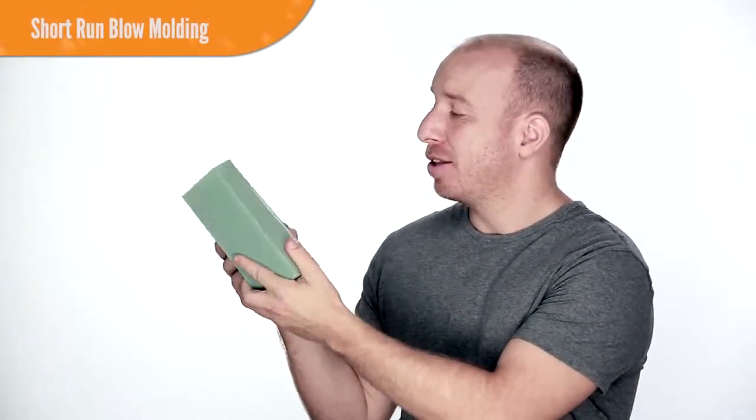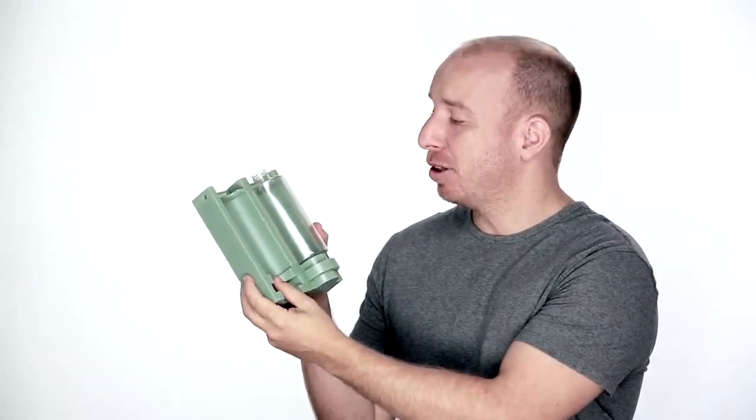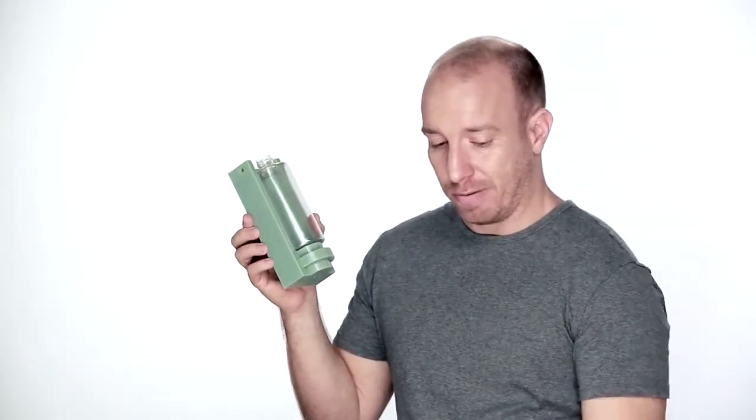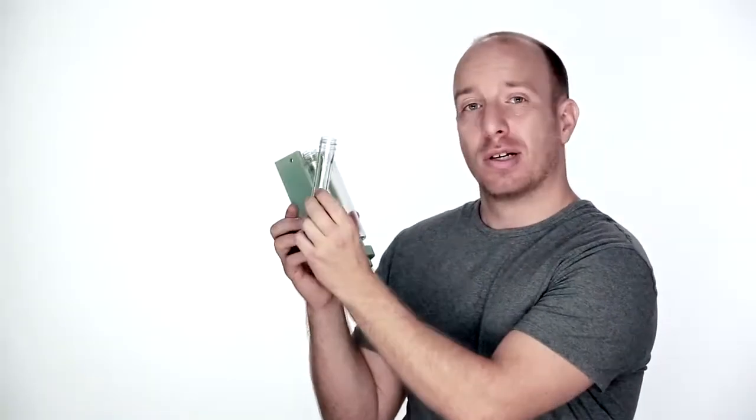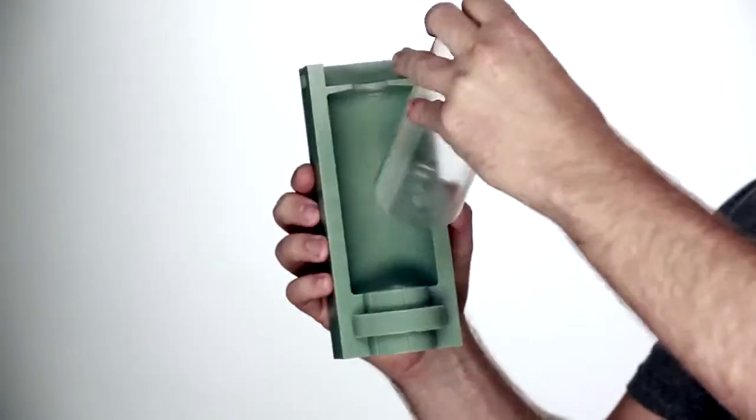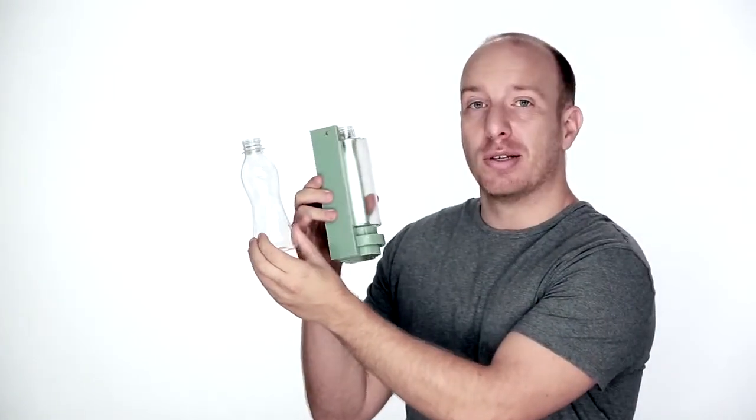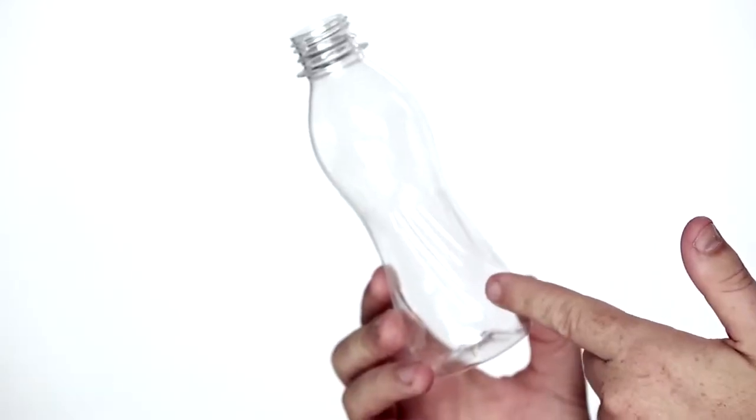Another very useful manufacturing application for the digital ABS material is in blow molding. And I have a very nice example here. These are mold tools printed in the digital ABS material. And inside we have injection molded PET material that is then blow molded inside the mold at 10 or 20 bars to produce this very nice bottle.